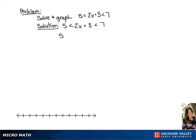So the first thing we're going to do is subtract 3 from all sides of this inequality. Now we have 2 is less than 2x, and 2x is less than 4.